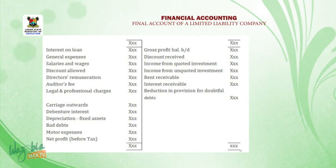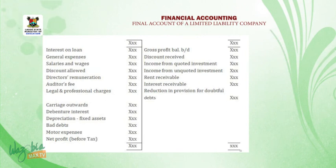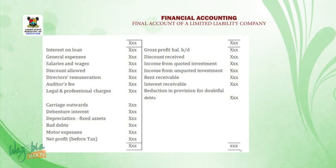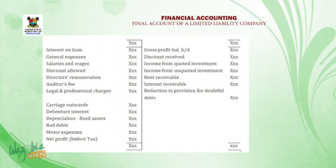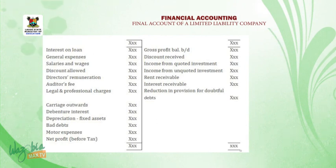On the credit side, we have our gross profit balance brought down, discount received, income from quoted and non-quoted investments, rent receivable, interest receivable, and reduction in provision for doubtful debts. All these are added together. Where the total of the credit side is greater than that of the debit side, we have our net profit before tax.